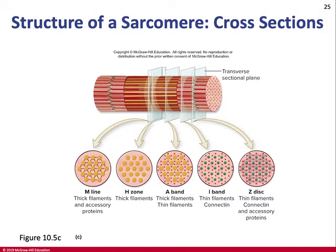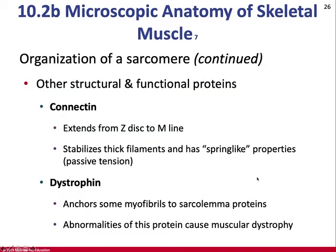That transfers the force ultimately to the tendon, making the movement. Moving along a sarcomere in different regions: at the M-line we see thick filaments and accessory proteins; the H-zone is thick filaments only; the A-band has thick and thin; the I-band has thin filaments and a protein called connectin. The Z-disc has connectin, accessory proteins, and actin. Connectin (also called titin) runs from the Z-disc to the M-line, stabilizes the position of thick filaments, and has a spring-like property.